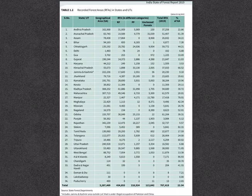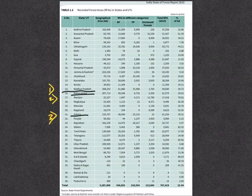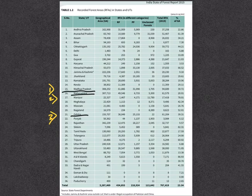From this table, we can make two observations: individual total recorded forest area per state, and total recorded forest area with respect to the geographical area of individual states. As per the 2019 report, total recorded forest area is highest in Madhya Pradesh, followed by Maharashtra and Odisha. In terms of recorded forest area with respect to total geographical area, Sikkim is first, closely followed by Manipur. Among union territories, Andaman and Nicobar Islands is at the first place.